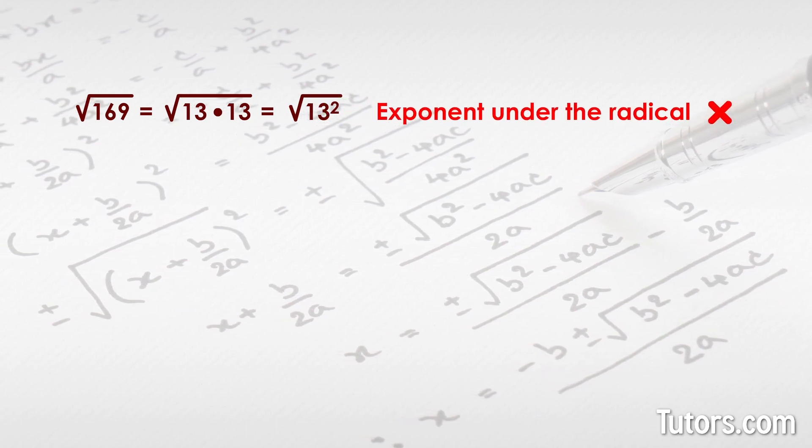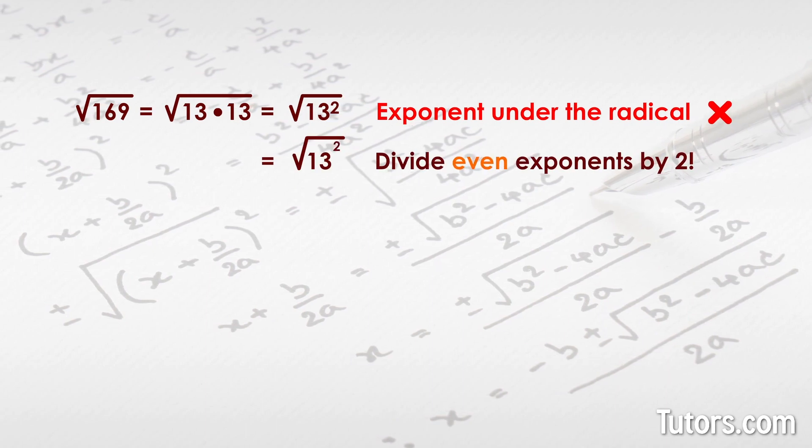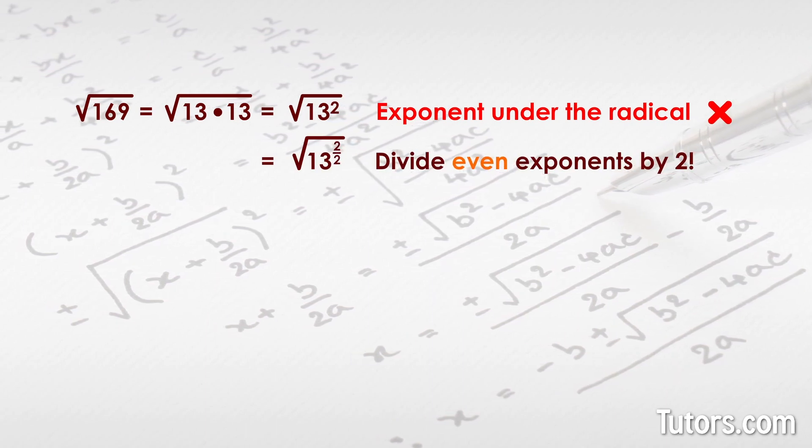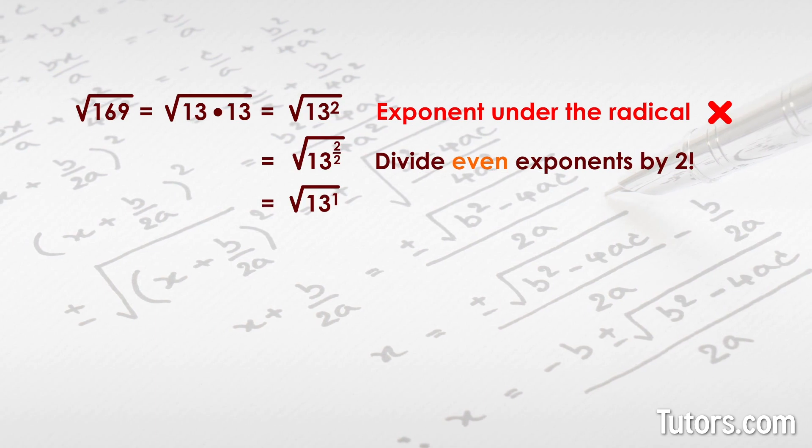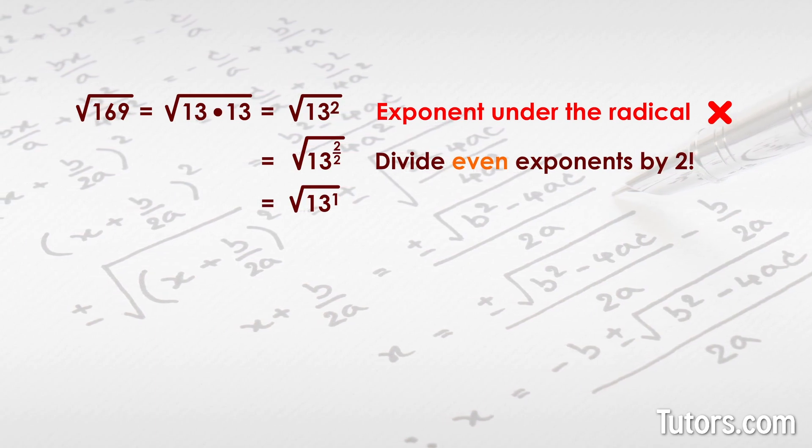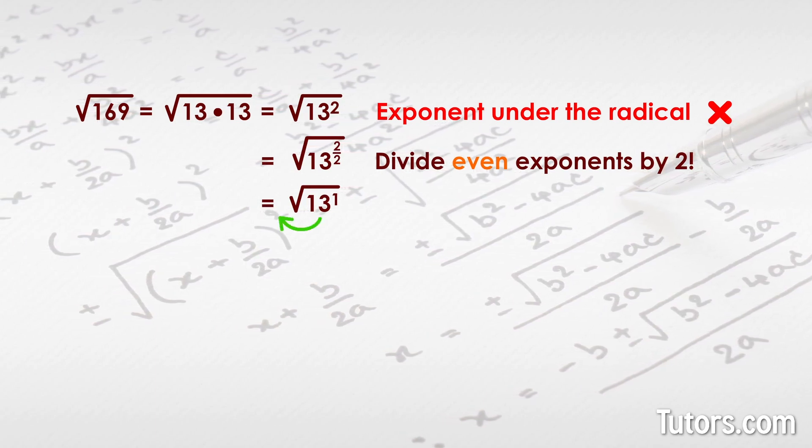To remove exponents from under radical signs, we divide even exponents by 2. Then, move the base number, in this case 13, and its resulting exponent outside the radical sign.